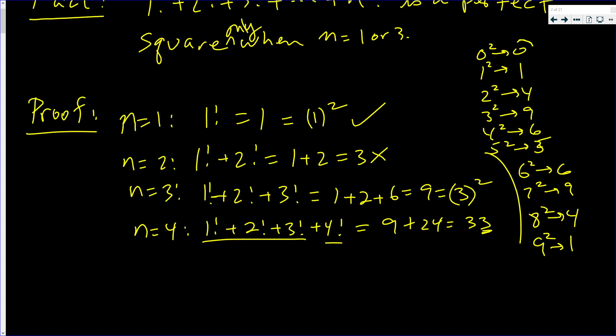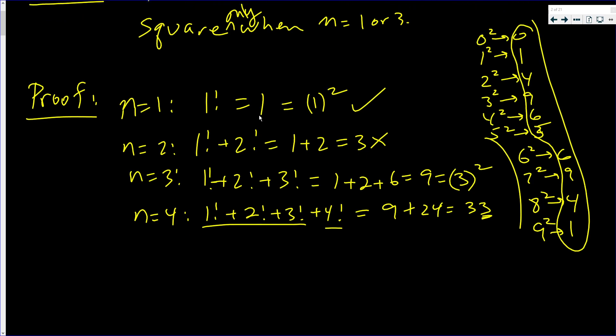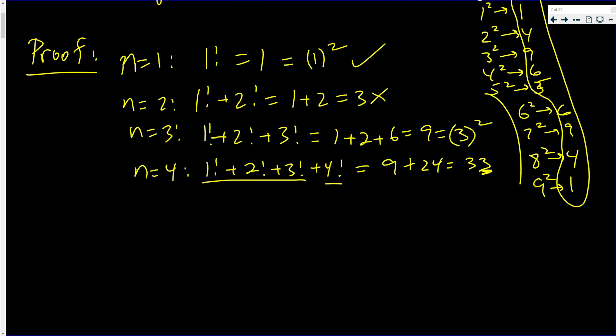Okay, notice no number, when you square it, can end in a three. Okay, now, again, four ends in a three when n is equal to four.